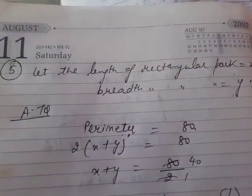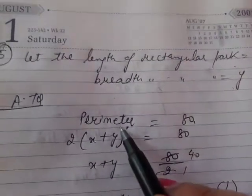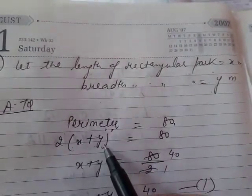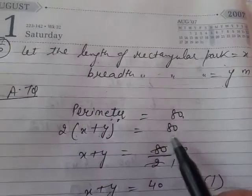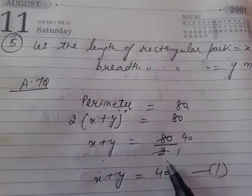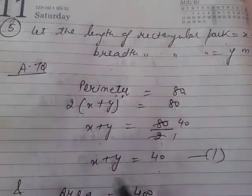Perimeter is given. Perimeter formula is 2 times length plus breadth. Length is x, breadth is y. So 2 into x plus y is equal to 80. x plus y is equal to 80 divided by 2, that is 40. x plus y equals 40.